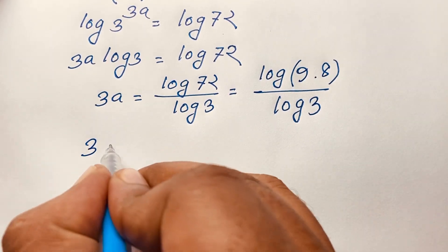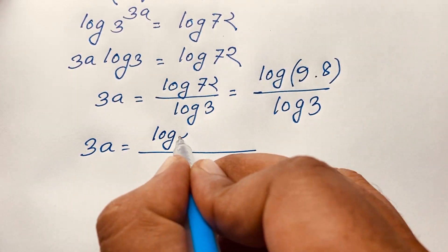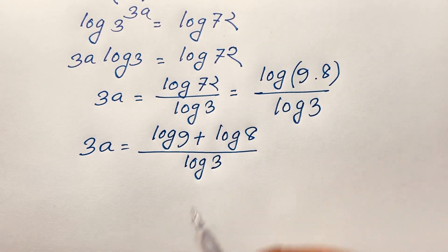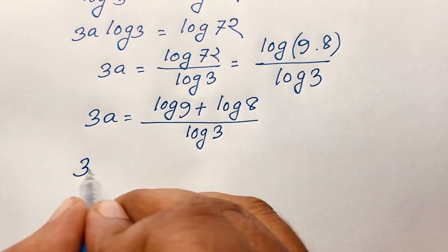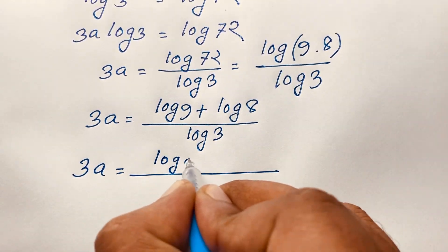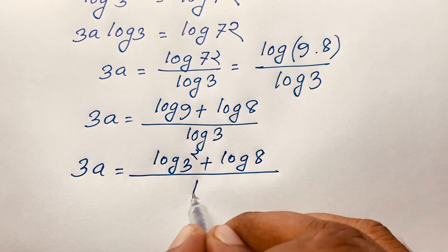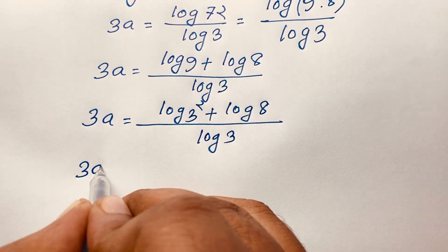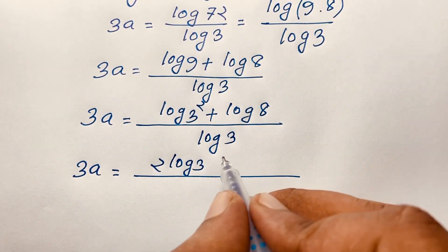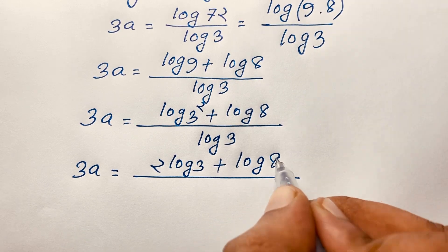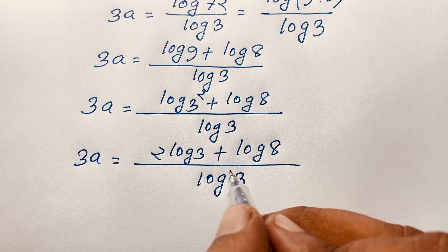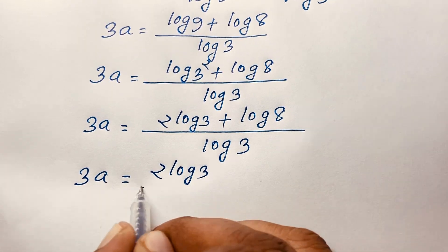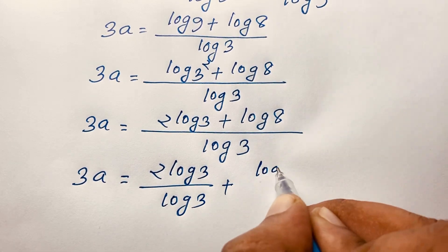So 3a is equal to log of 9 times 8 over log 3. Using the log product rule, log ab equals log a plus log b, this becomes log 3 squared plus log 8, all over log 3. The exponent moves in front, so it becomes 3a equals 2 log 3 plus log 8, divided by log 3. Separating the fractions, it will be 3a equals 2 log 3 over log 3, plus log 8 over log 3.